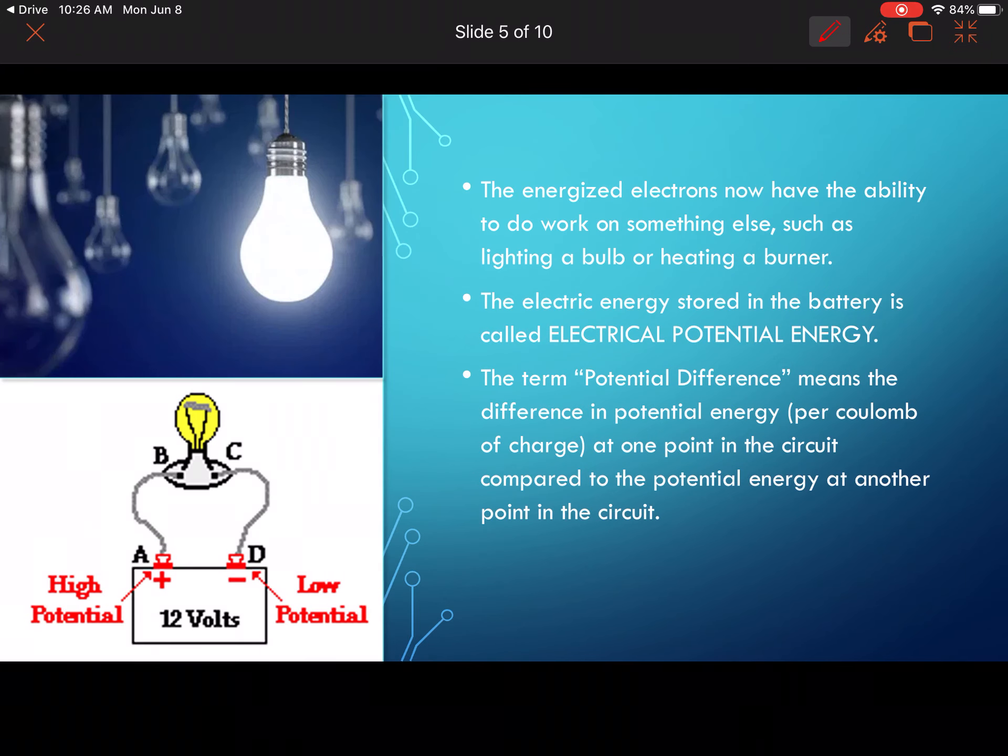Now they have energy and they want to move - they want to leave the negative end because they want to get close to that positive end. So this is why the electrons move; this is how we can capture the energy for electricity. These are how circuits work. The energized electrons now have the ability to do work on something else.